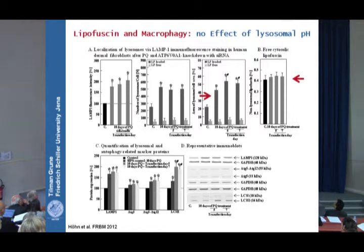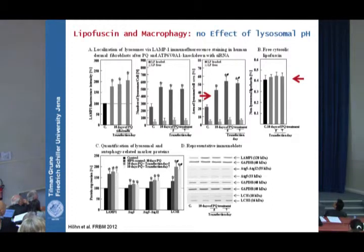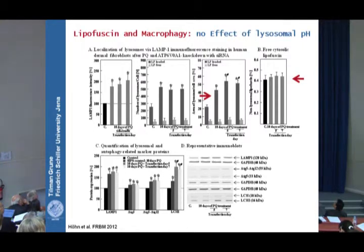So the acidic pH is not really needed for the production of lipofuscin — and there was no free-floating lipofuscin in the cytosol. The next question is whether lipofuscin is actually formed in the lysosomes, or formed beforehand and transported into the lysosomes.